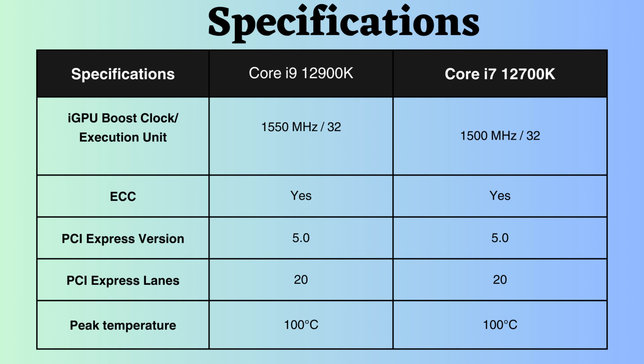Both processors support ECC, rendering them suitable for critical systems. Both of these processors support PCI version 5 and have 20 PCI lanes. The higher PCI version and increased number of lanes facilitate the handling of more peripheral devices and enable faster data transfer rates.